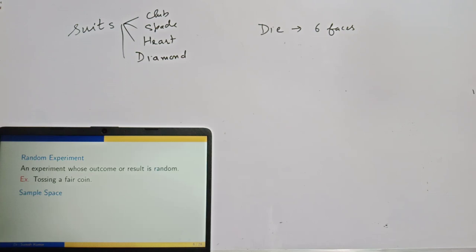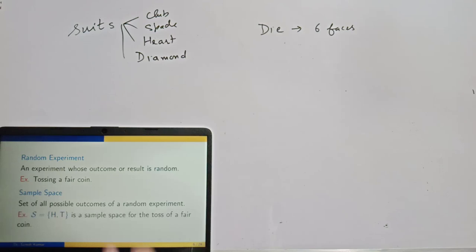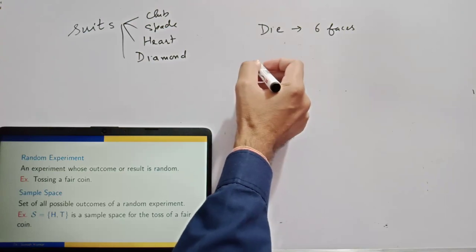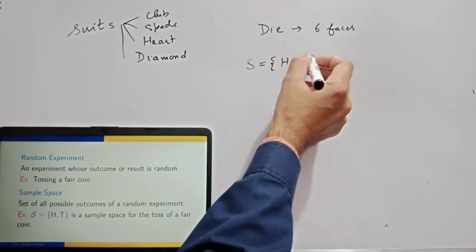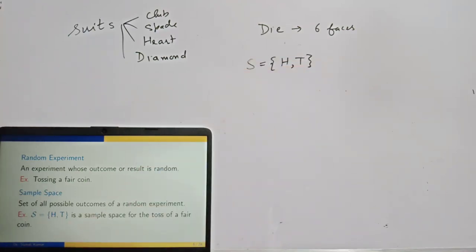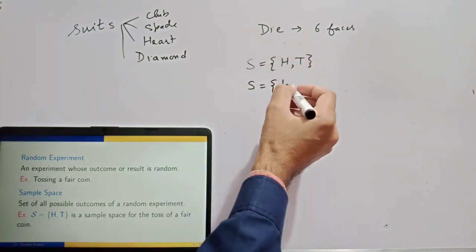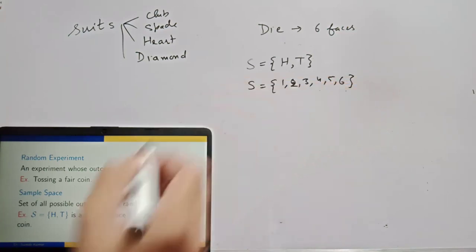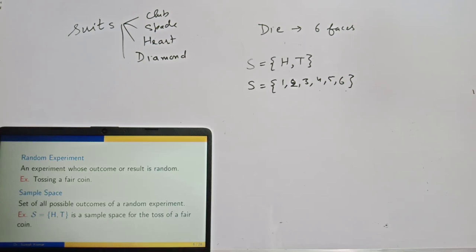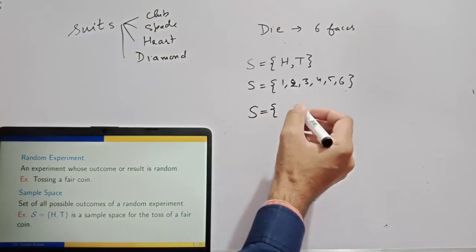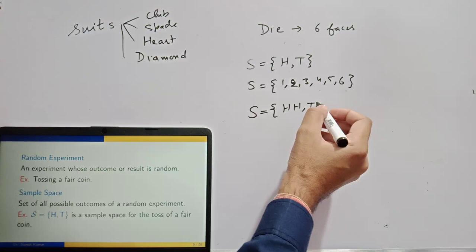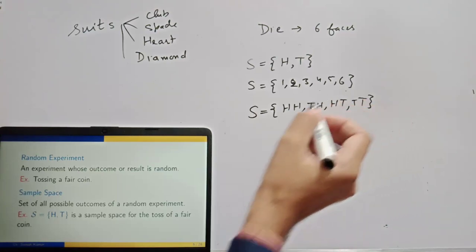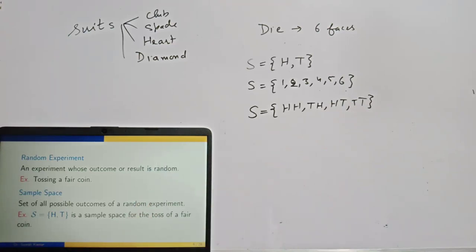What is the sample space? The set of all possible outcomes in the random experiment is the sample space of the experiment. If you are tossing a fair coin, the sample space S contains two outcomes: head and tail. If you are rolling a die, the sample space has six possible outcomes: one, two, three, four, five, six. If you toss two coins, the sample space is HH, TH, HT, and TT. I believe you are already familiar with this — I'm just doing a revision for you.